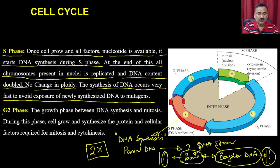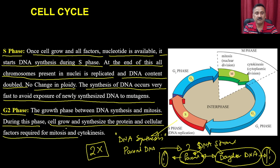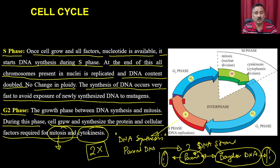The cell then enters the G2 phase, which is also a preparatory or growth phase between DNA synthesis and mitosis. During this phase, cells grow and synthesize proteins and cellular machinery required for mitosis and cytokinesis, including cyclin proteins, spindle proteins, tubulins, and related components.